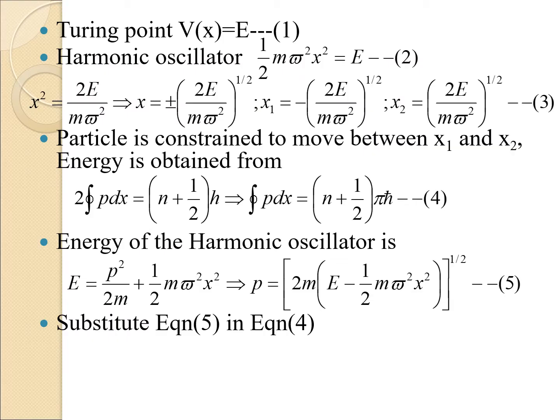Generally, the classical turning point occurs when the potential energy equals the total energy. For a harmonic oscillator, the potential energy is ½mω²x², which is set equal to E. So x² = 2E/mω², and x = ±(2E/mω²)^(1/2). Thus x₁ = −(2E/mω²)^(1/2) and x₂ = +(2E/mω²)^(1/2).